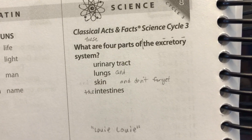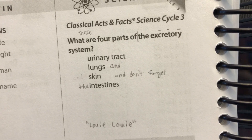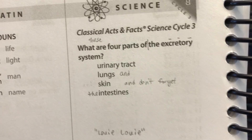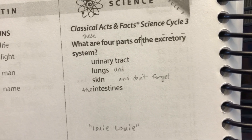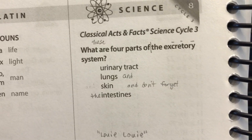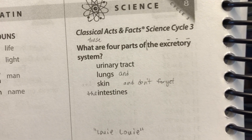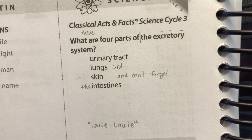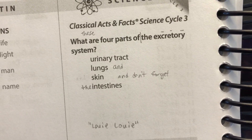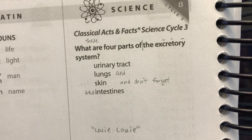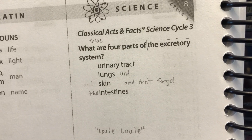These are four parts of the excretory system. Urinary tract, lungs and skin, and don't forget the intestines. These are four parts of the excretory system.